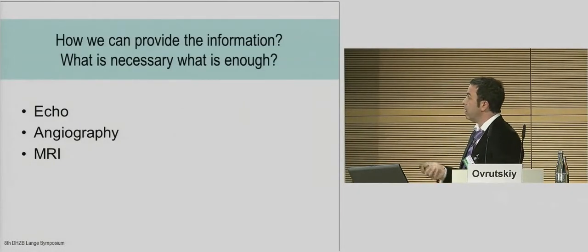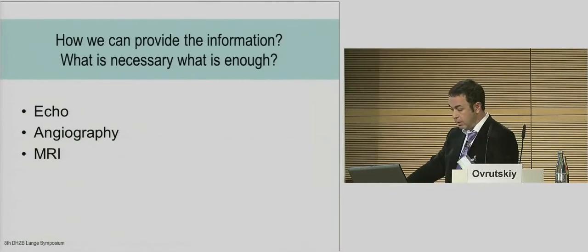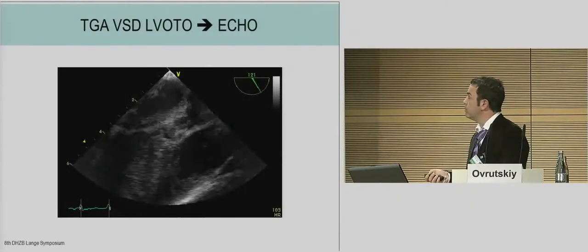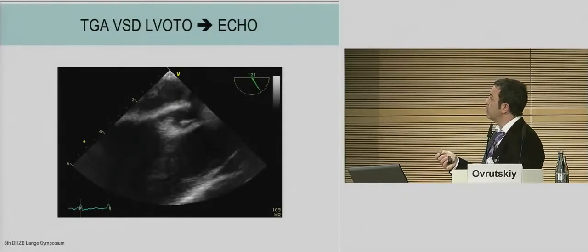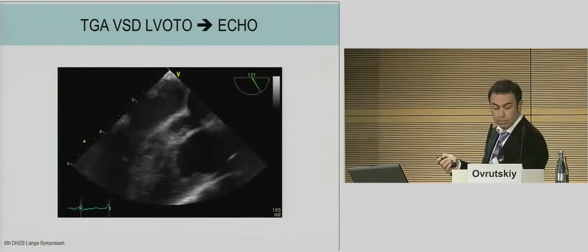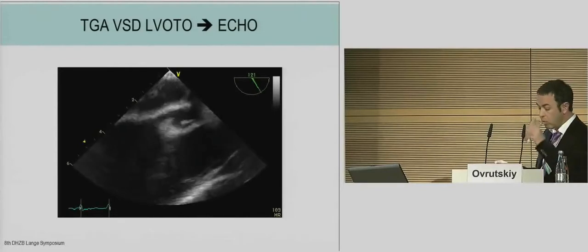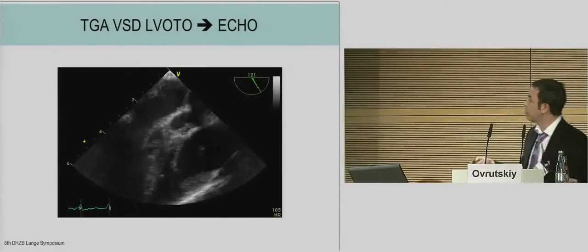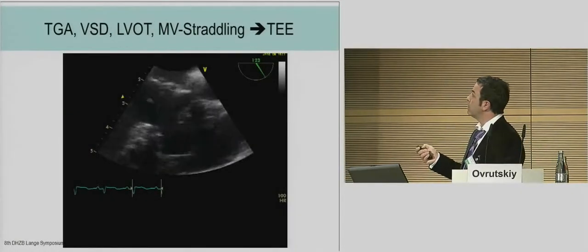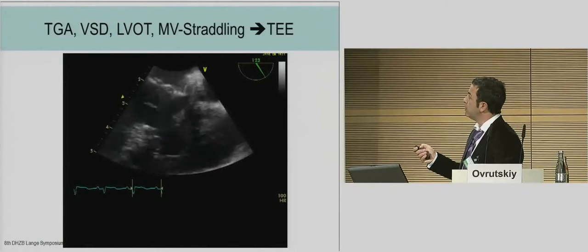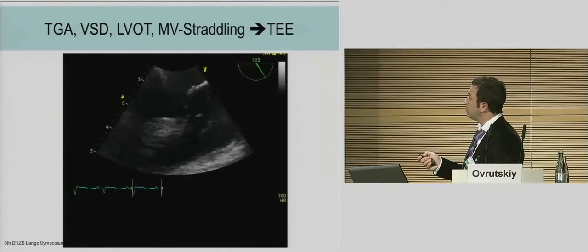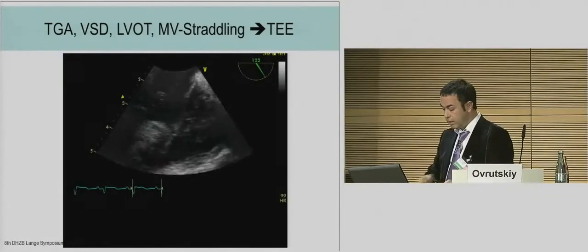What do we need? Echo, angiography, MRI, and sometimes transesophageal echocardiography gives us excellent information. We can see here the aortic valve, stenotic pulmonary valve, outflow tract obstruction from the left ventricle, and a very small restrictive VSD. Also, the threading of the mitral valve — you can see the chordae of the mitral valve passing through the VSD to the right part of the interventricular septum.